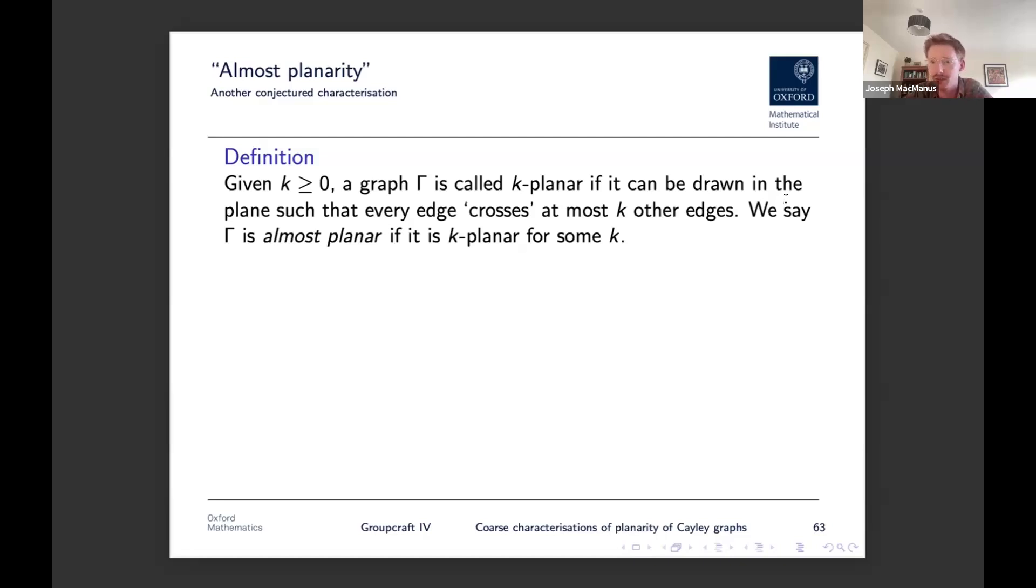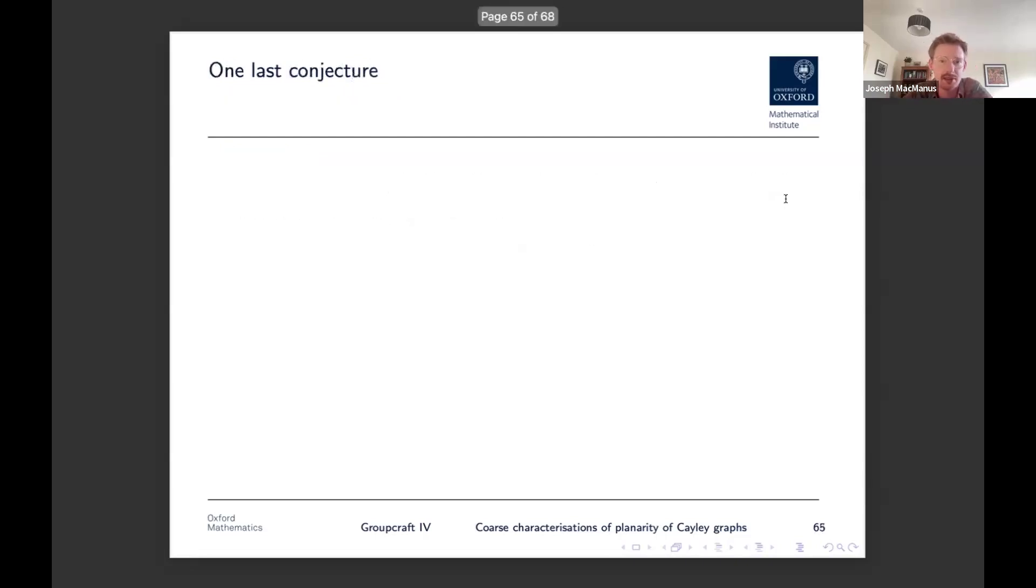So, for example, if you have the Cayley graph, standard Cayley graph of Z squared times Z two, then it looks a bit something like this. And you can kind of see that in this drawing, it's not a planar graph by any means, but in this drawing, every edge crosses at most one of the edge. So this is a one-planar graph. It's almost planar. Now, it turns out that almost planarity you can show is a QI invariant amongst bounded valence graphs. If you want something to do, try and prove this yourself. I think it's quite a fun thing to try and prove. I proved this myself and then I realized that it was already known. But yeah, Benjamin and Schramm proved it in like 1999 or something like that.